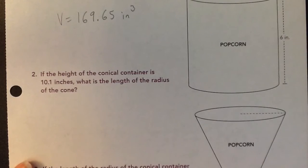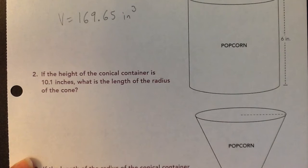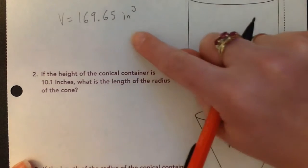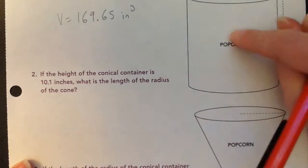Number 2 says, if the height of the conical container is 10.1 inches, what is the length of the radius of the cone? We already know what the volume of this cone is because it's the same thing as the cylinder was.